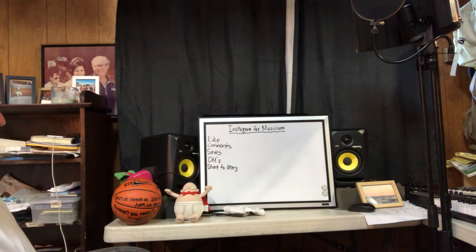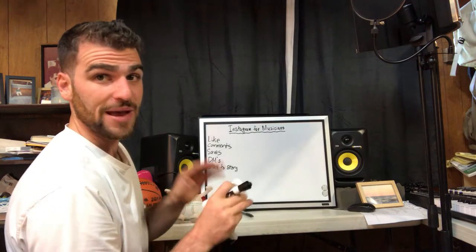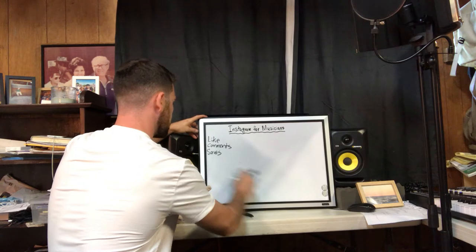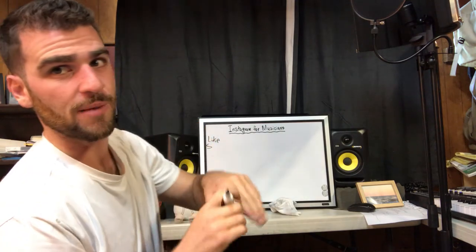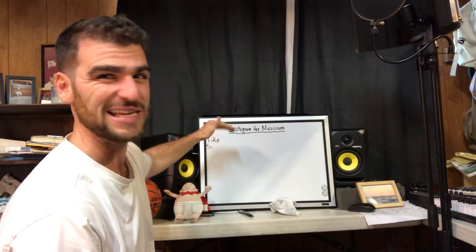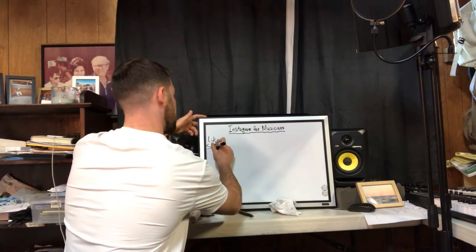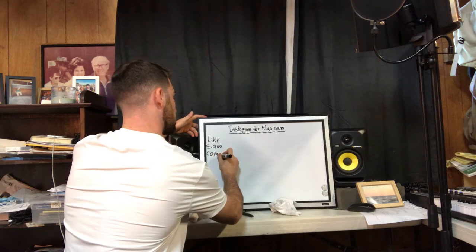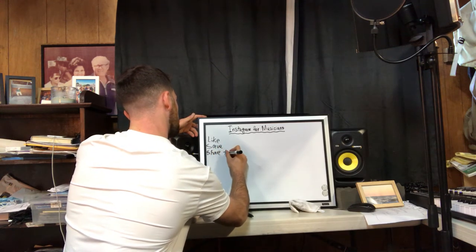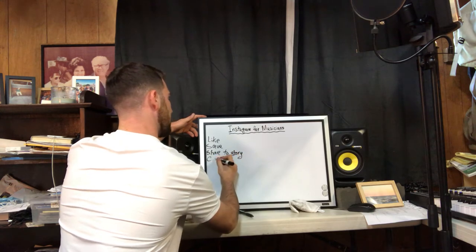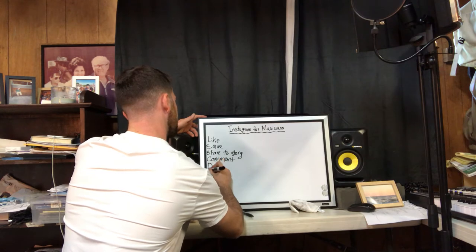If we were to rank these by importance, DMs are probably the best piece of engagement you can get. So we're going to rank these where the top is the least important and the bottom is the most important. The least quality piece of engagement is a like, then saves, then share to story, then a comment, then a DM.